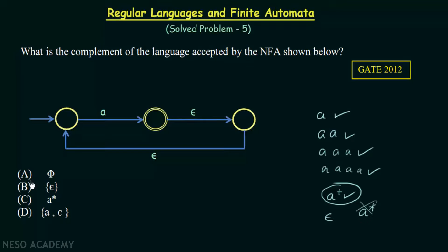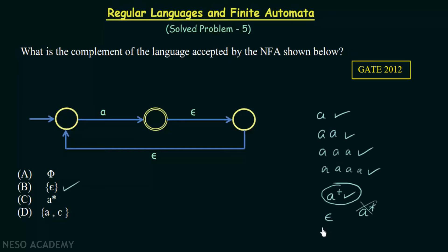Looking at the options: A is phi, B is epsilon, C is A-closure, and D is A and epsilon. The correct option is B, which is epsilon. Option A (phi) is wrong, option C (A-star) is wrong for reasons already explained, and option D (A and epsilon) is also incorrect — that would imply at least one A followed by epsilon, which is not the complement. Since the language accepts only A+, its complement contains no A at all, just epsilon. The correct answer is option B.